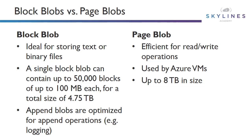What is the difference between a block blob and a page blob? A block blob is ideal for storing text or binary files — images and video files. A single block blob can contain up to 50,000 blocks of up to 100 MB each, for a total size of 4.75 terabytes. Append blobs are also there and they're optimized for append operations — for example, for logging. Page blobs, on the flip side, are for read-write operations. Think of your VM disks here. These are used by Azure VMs and can be up to 8 terabytes in size.